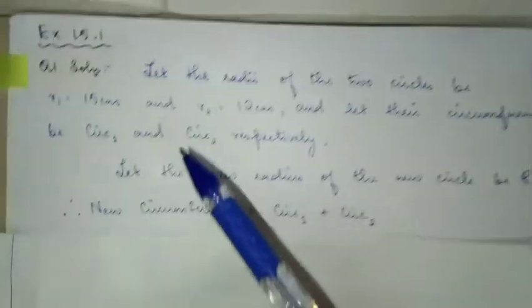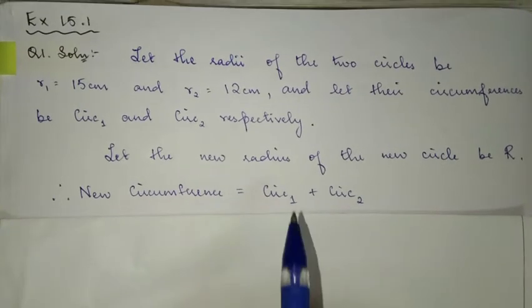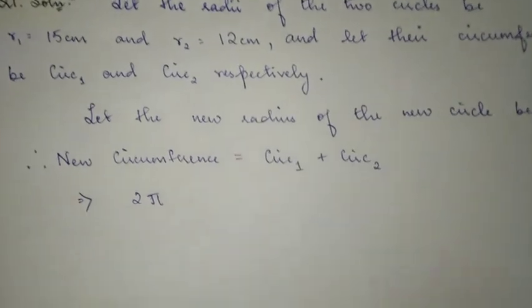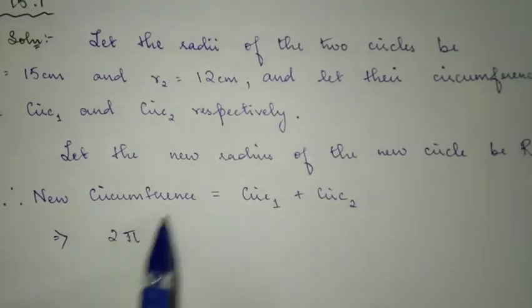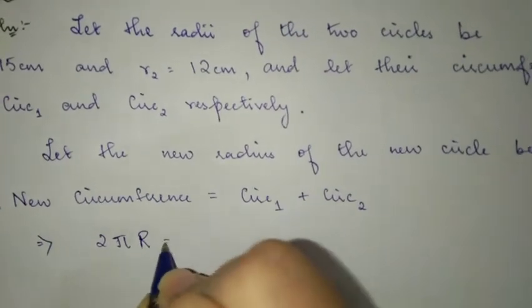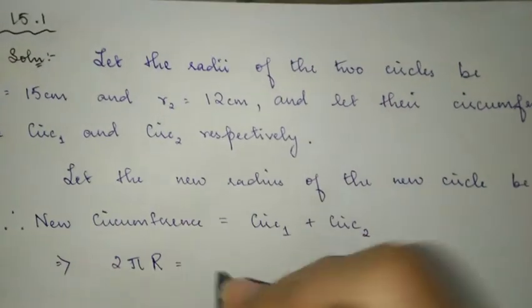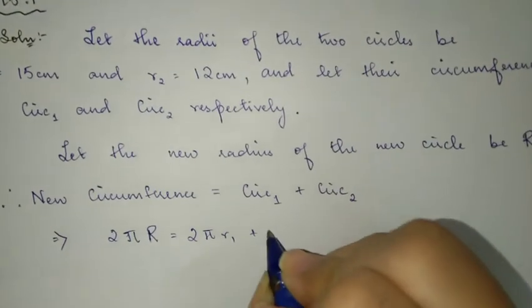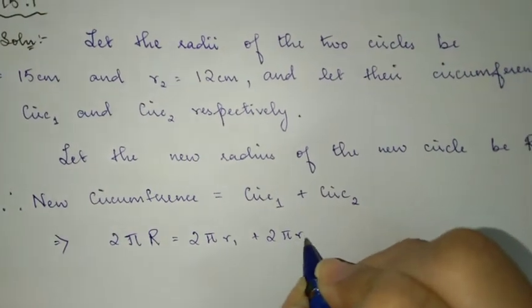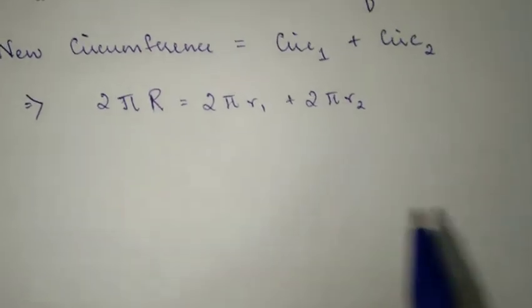Question number 1: circumference of the new circle is equal to circumference 1 plus circumference 2. The new circle has radius capital R; circumference 1 has radius R1, giving 2πR1; and circumference 2 has radius R2.